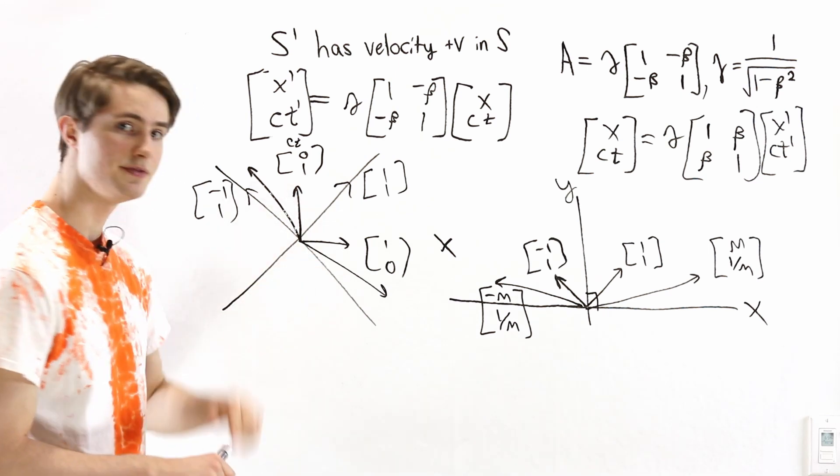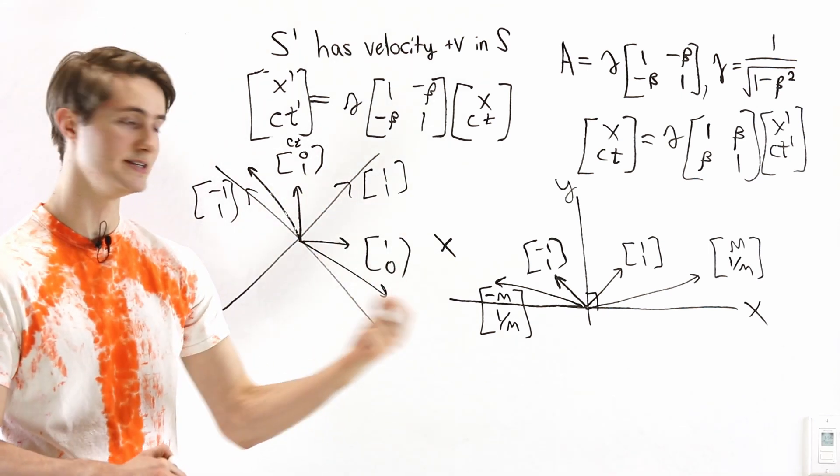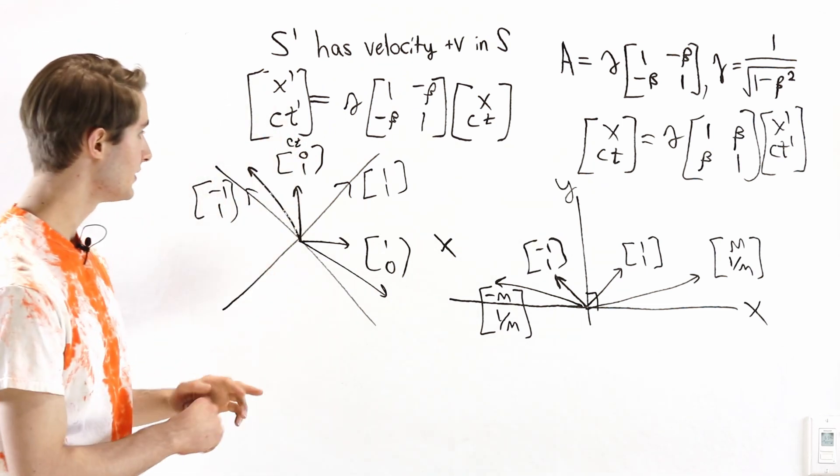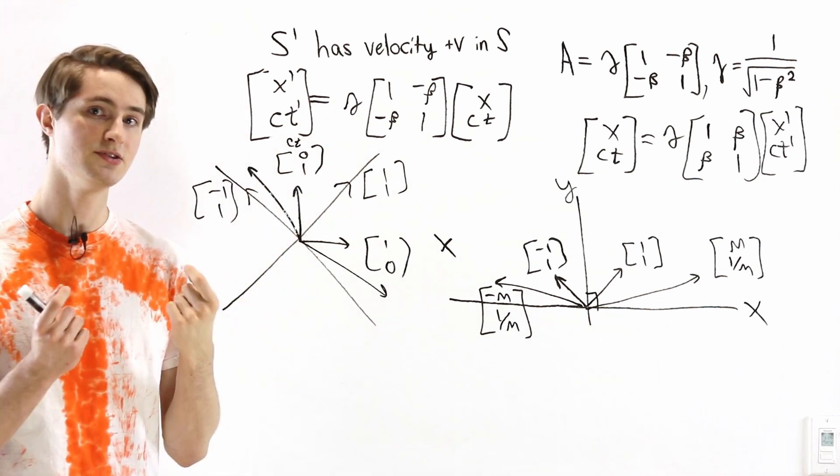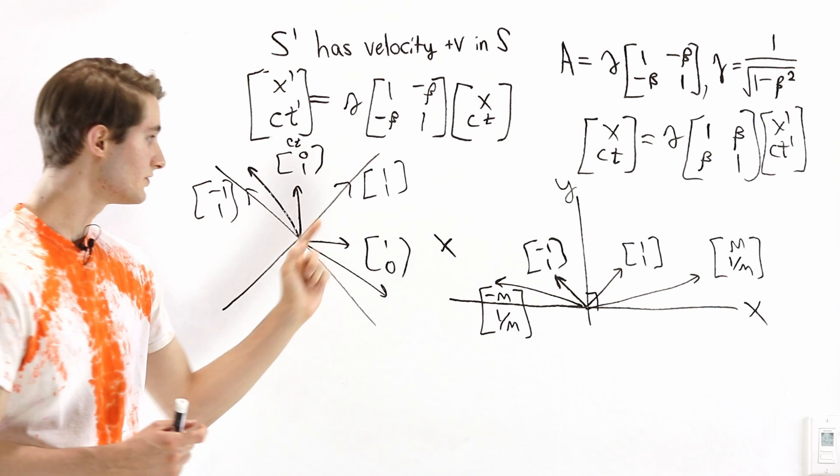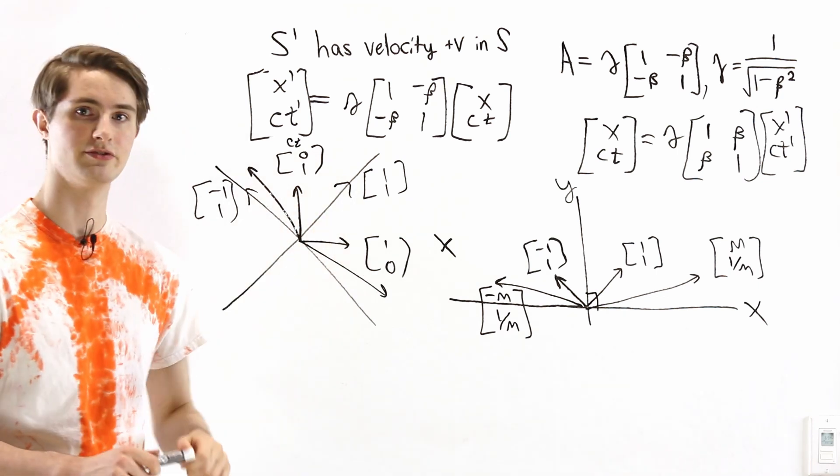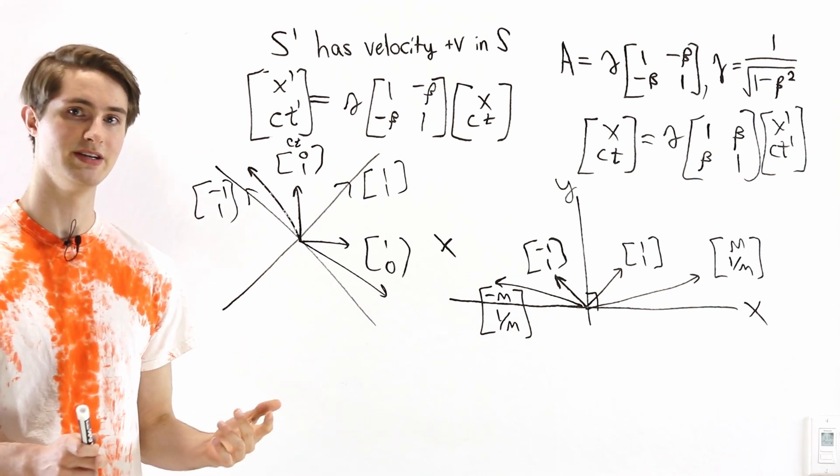And so the relativity of simultaneity is really just a symmetric idea to the fact that stationary objects start moving. In special relativity, in order to keep these light rays at the same speed, we see that space and time become symmetric with respect to these coordinate transformations. And that's why we observe the relativity of simultaneity.